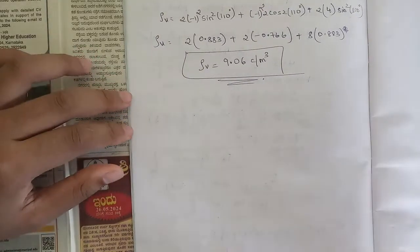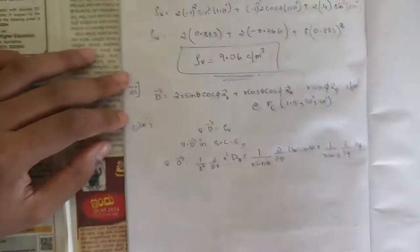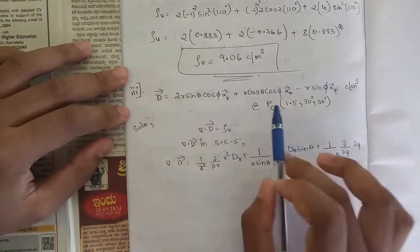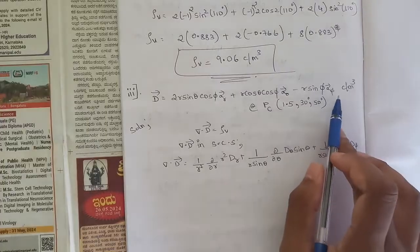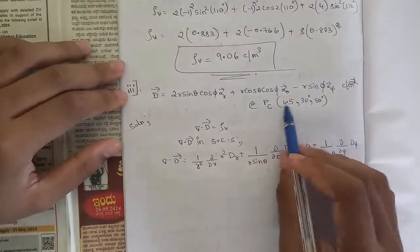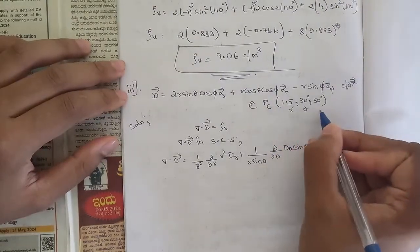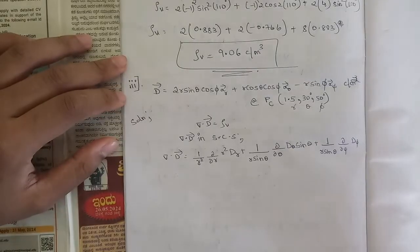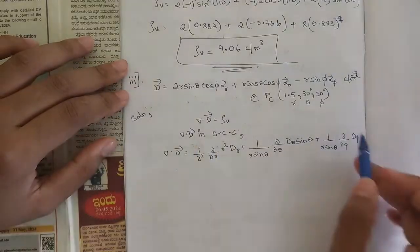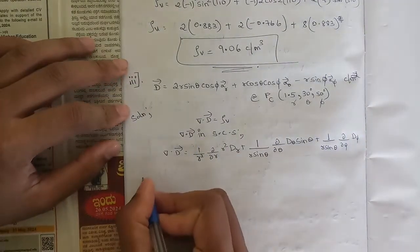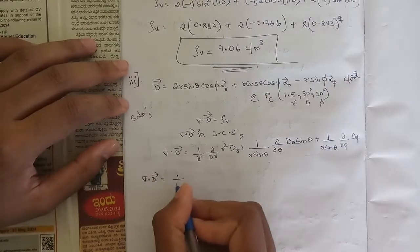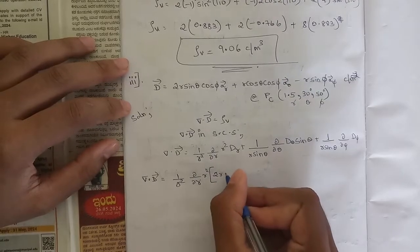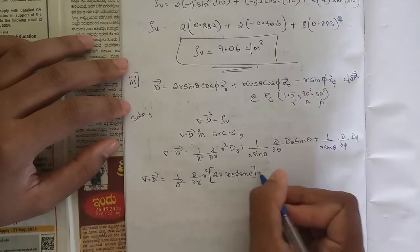Now we have one more sub-question based on the spherical coordinate system. D is equal to 2r sinθ cosφ a_r + r cosθ cosφ a_θ − r sinφ a_φ coulombs per meter square, at the point (1.5, 30°, 50°) — these are the values of r, θ, and φ. Since we have r, θ, φ, the coordinate system is spherical. For spherical coordinates, after expanding del dot D we substitute the D_r, D_θ, and D_φ terms: (1/r²)(∂/∂r)(r² · 2r sinθ cosφ) + ...